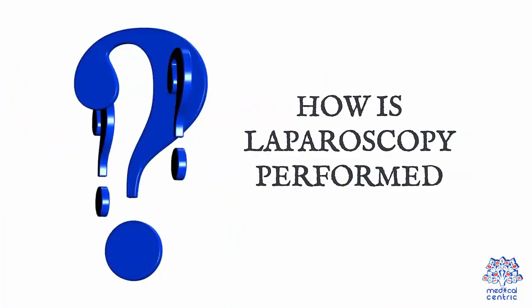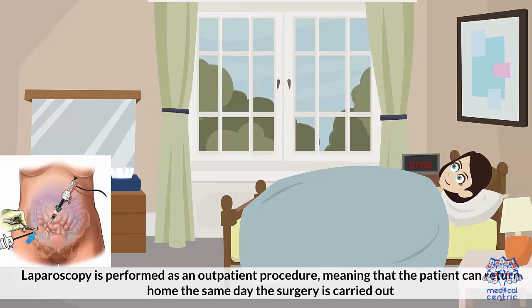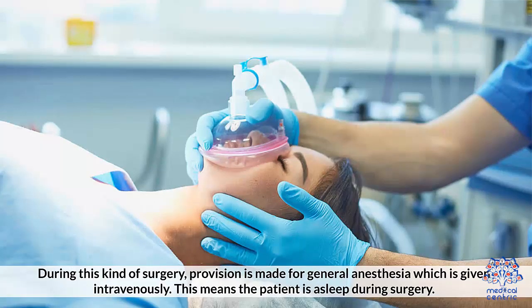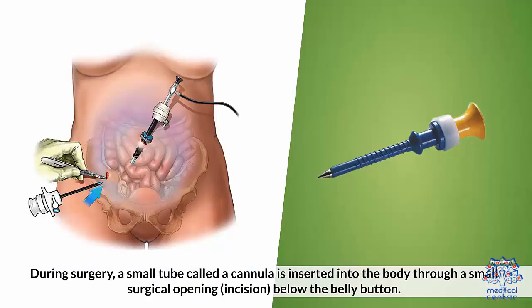How is laparoscopy performed? Laparoscopy is performed as an outpatient procedure, meaning that the patient can return home the same day the surgery is carried out. During this kind of surgery, provision is made for general anesthesia, which is given intravenously, meaning the patient is asleep during surgery. During surgery, a small tube called a cannula is inserted into the body through a small surgical incision below the belly button.